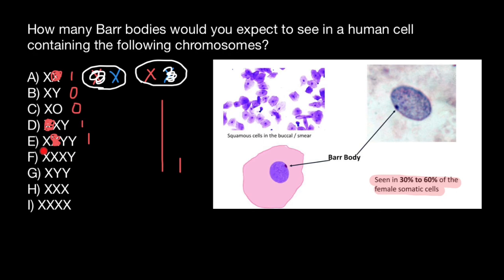The next variant is also going to be phenotypically male because we see a Y chromosome, but this male has three X chromosomes (XXXY). Two of these X chromosomes would be deactivated — only one X chromosome per cell can be active — so we will see a male with two Barr bodies.